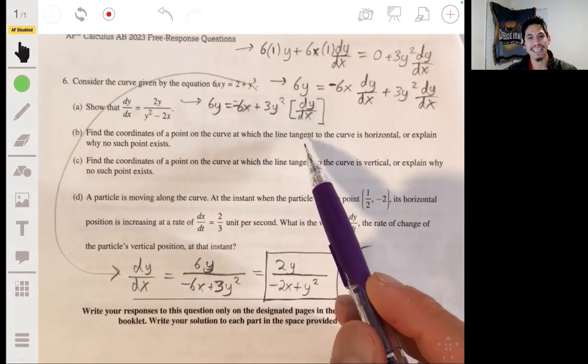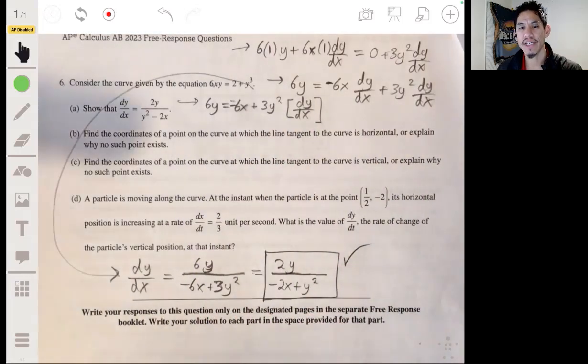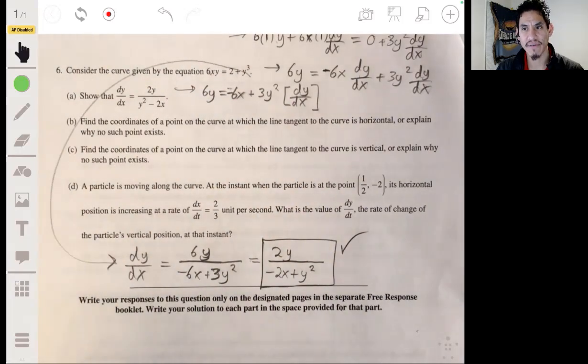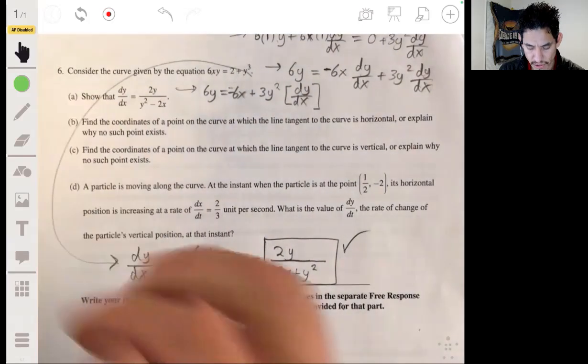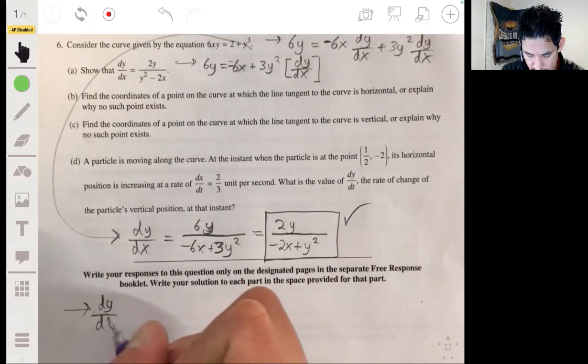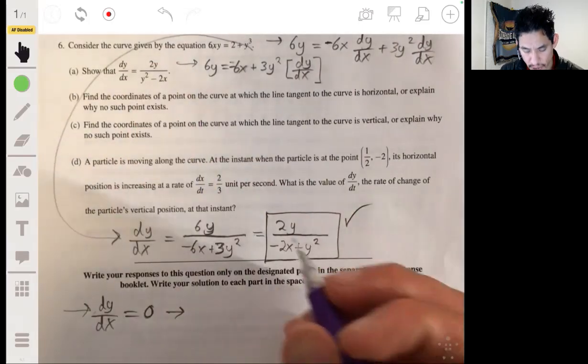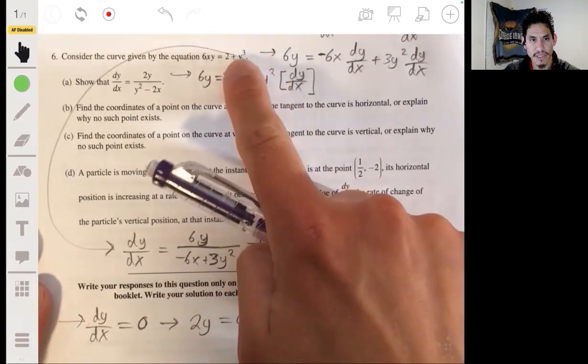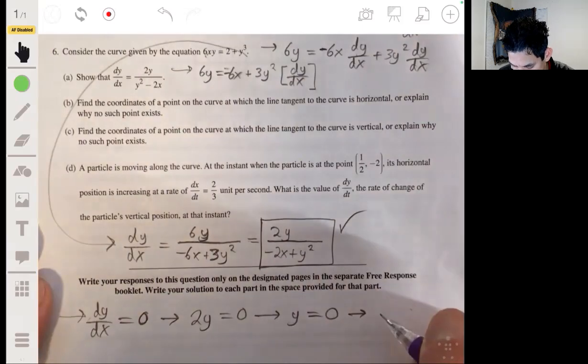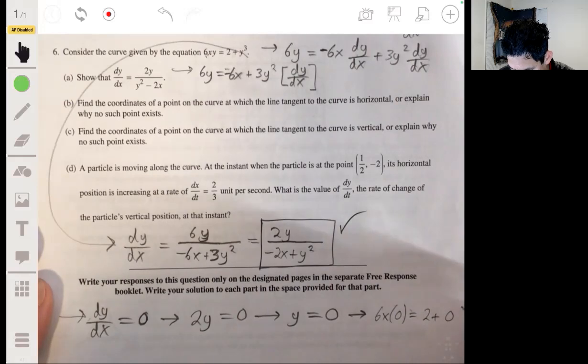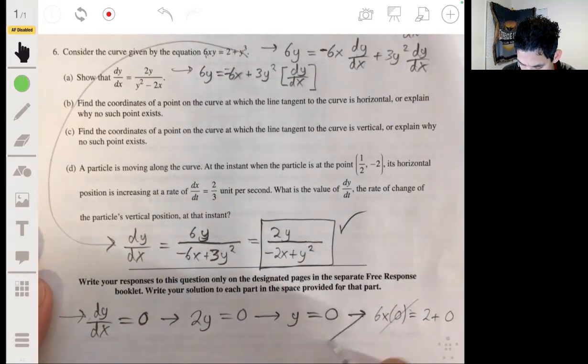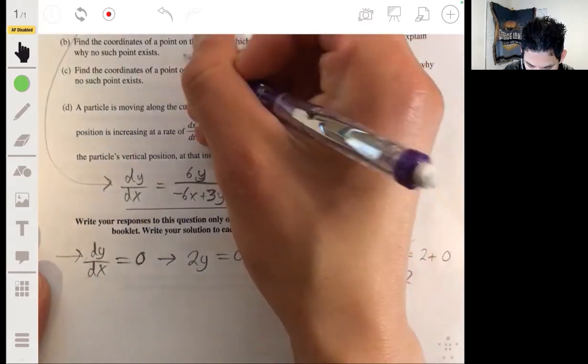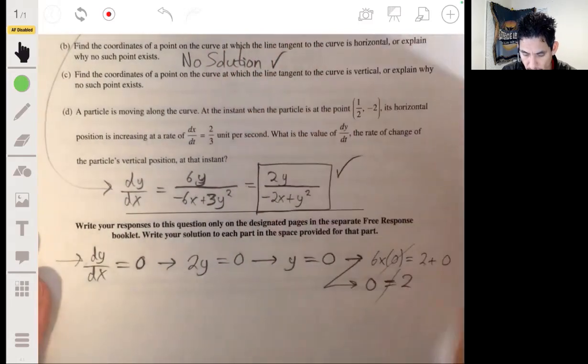All right, part B. Find the coordinates of a point on the curve at which the line tangent to the curve is horizontal or explain why no such point exists. For a line to be horizontal, for a tangent line to be horizontal means it's going to be flat and it's going to have a derivative or a slope of 0. So we're going to set this derivative equal to 0. So we essentially just have to solve for the numerator, 2y being equal to 0, and that will occur when y is 0. Now let's find the corresponding x value when y is 0 by plugging 0 into this equation here. So we'll get 6x times 0 is equal to 2 plus 0, and then this becomes 0 is equal to 2. And we know that's not true. So there's no solution.